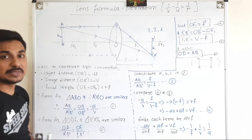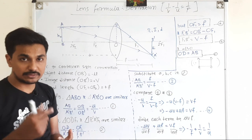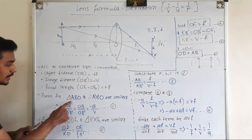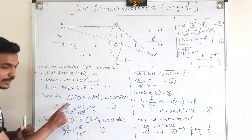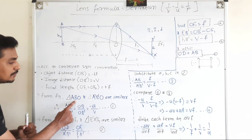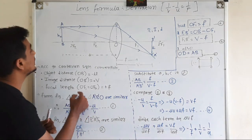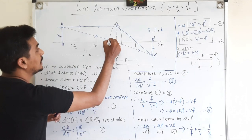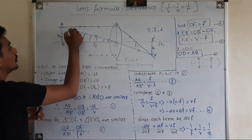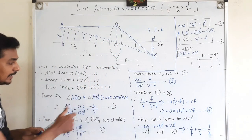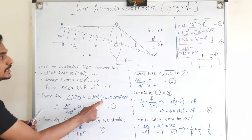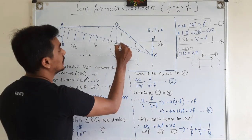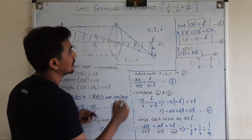Using the similarity of triangles — a theorem you have already learned — here you can see right angle triangle ABO and another triangle A'B'O. These two triangles are similar.